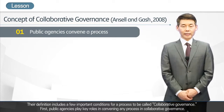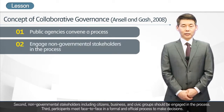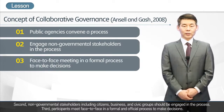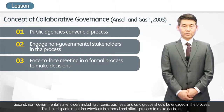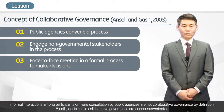First, public agencies play key roles in convening any process in collaborative governance. Second, non-governmental stakeholders including citizens, business, and civic groups should be engaged in the process. Third, participants meet face-to-face in a formal and official process to make decisions. Informal interactions among participants or mere consultation by public agencies are not collaborative governance by definition.